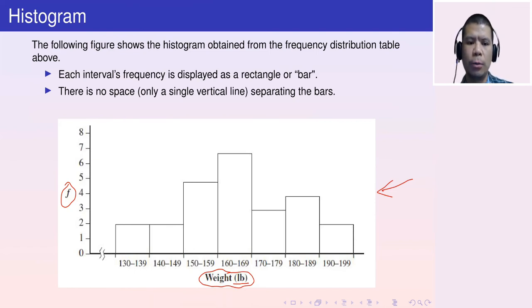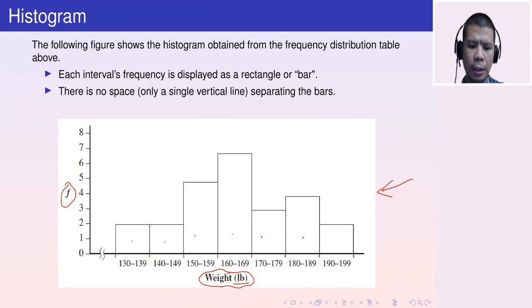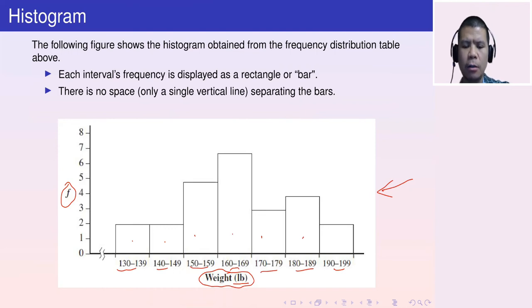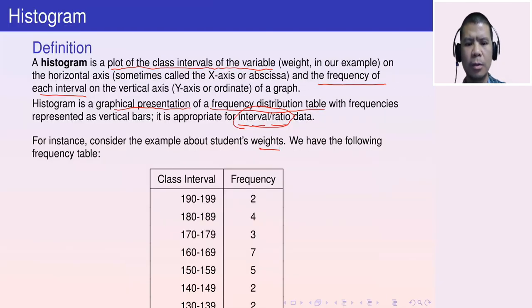In the histogram there are rectangular bars below which are the corresponding intervals. The bars are of different heights, and those heights correspond to the frequencies of the respective intervals.